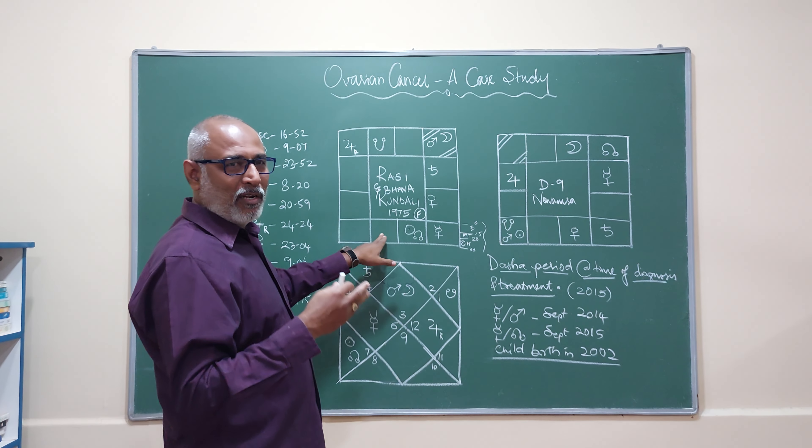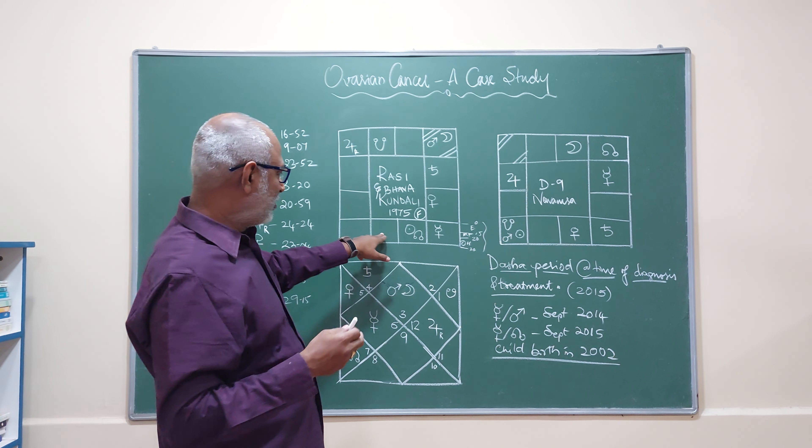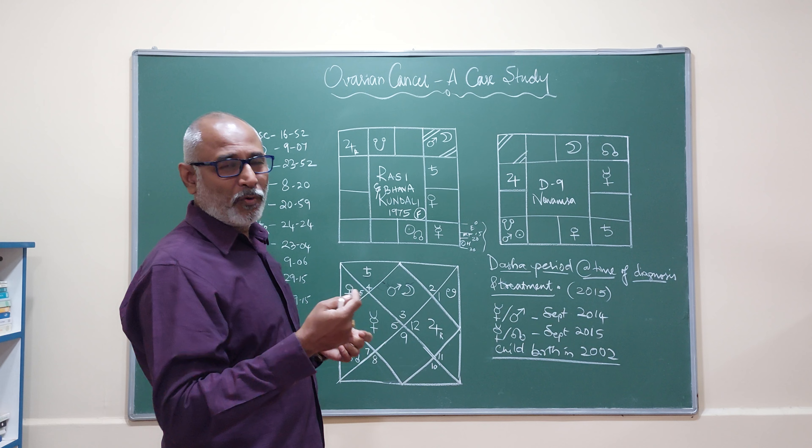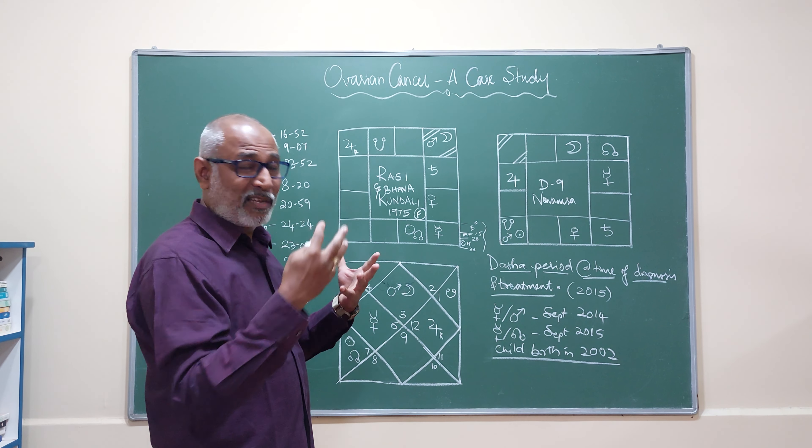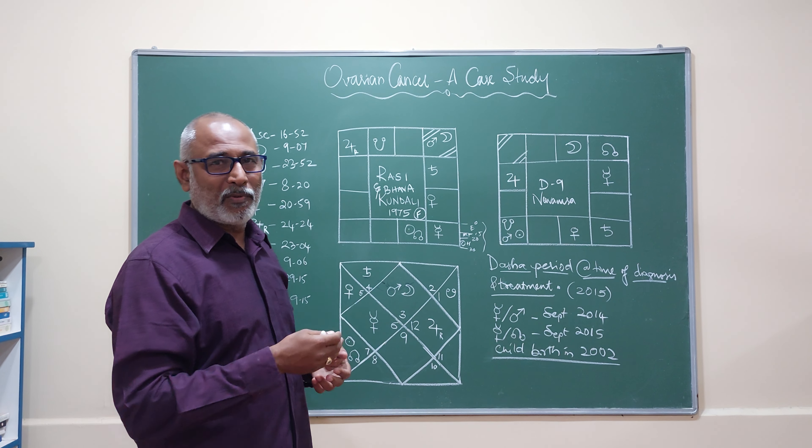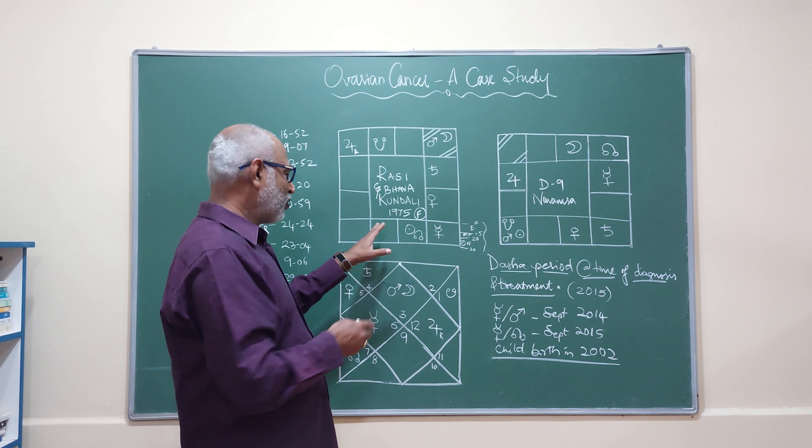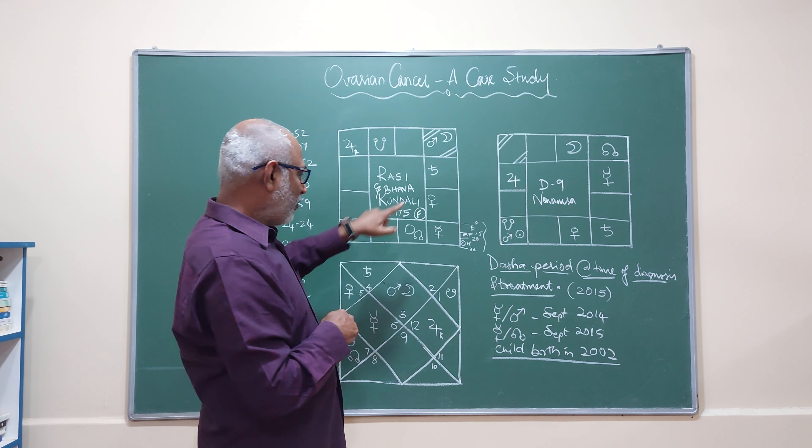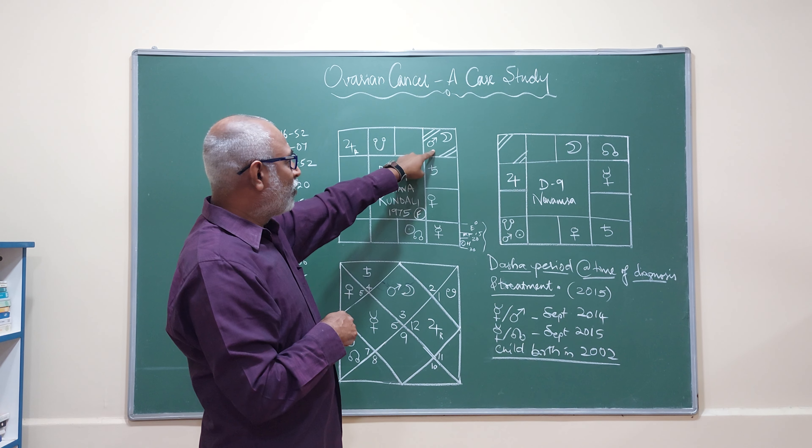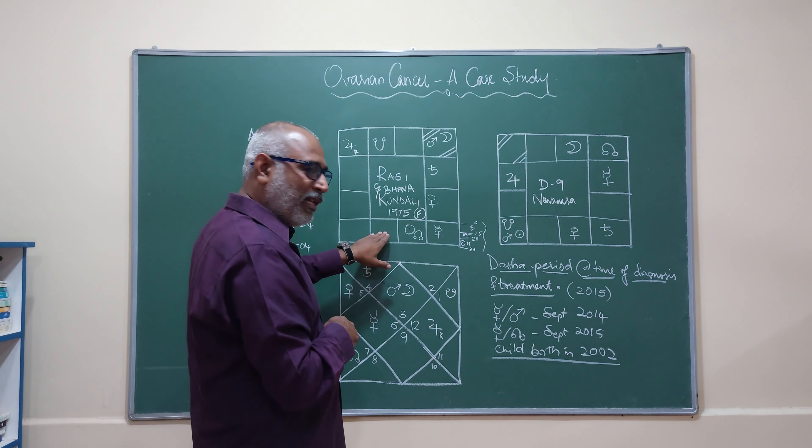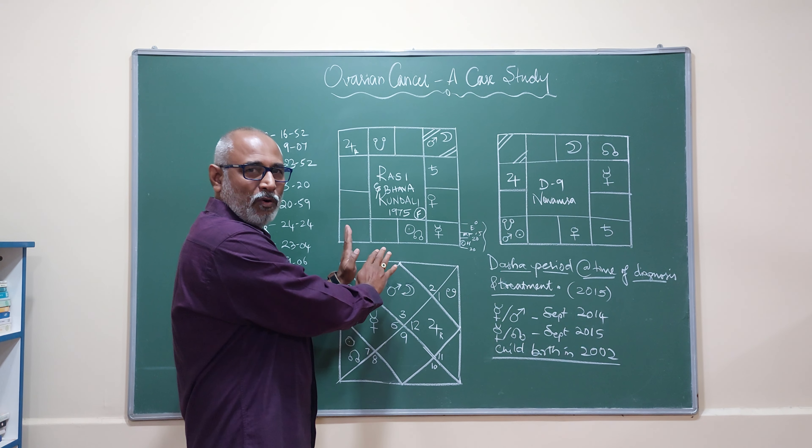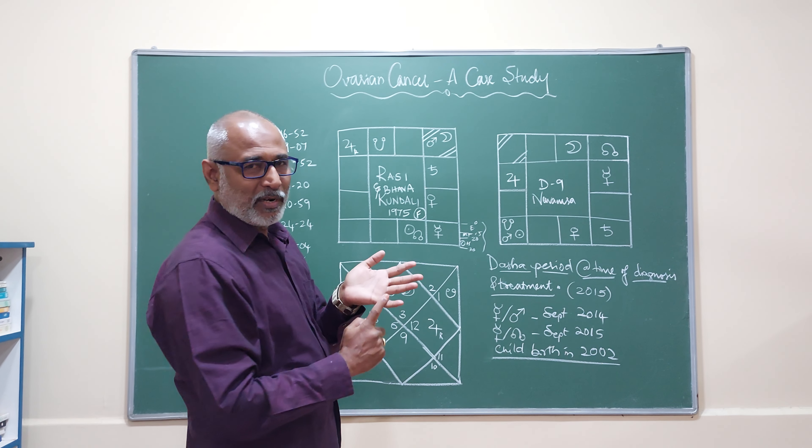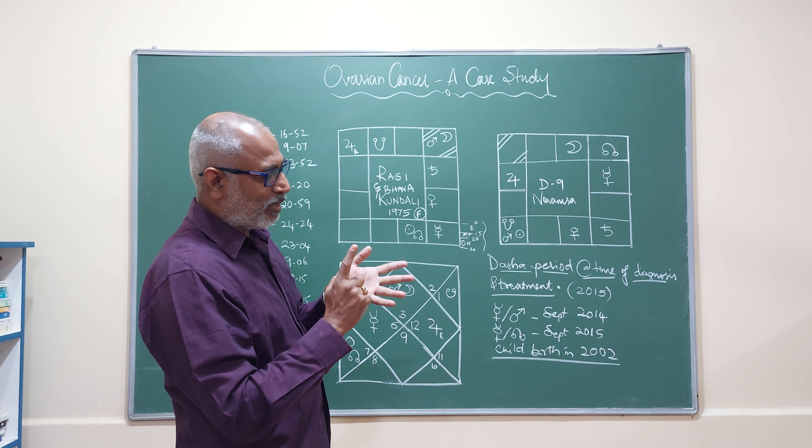Second level, the sixth lord. The lord which represents roga diseases. Roga, ripu, runa. Ripu means enemies, runa means debts. Where is it posited? It is posited in the Lagna. When the lord of the disease is posited in the Lagna, it will cause difficulty to the native. Any else, anything else posited in the sixth house? No planet in the sixth house. So that's good. We finished the first two criteria. That is Lagna, Lagna Adipati, Sixth lord and Sixth house. Finished it.